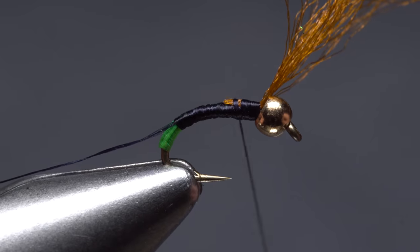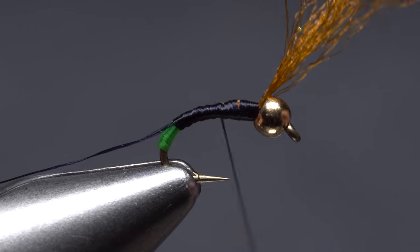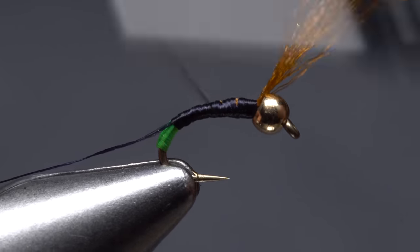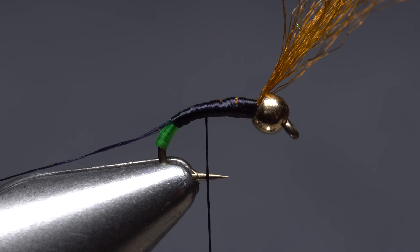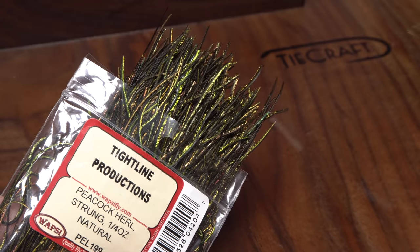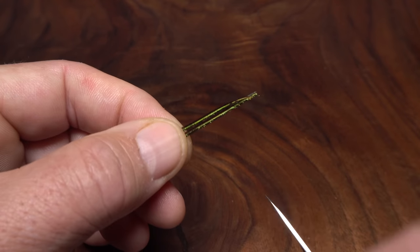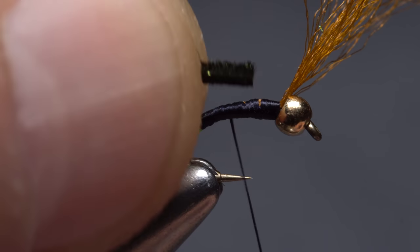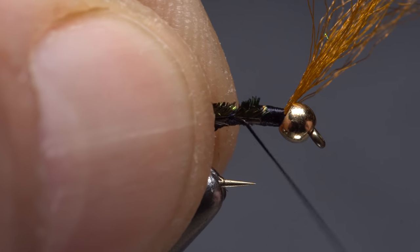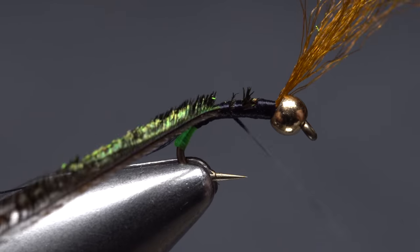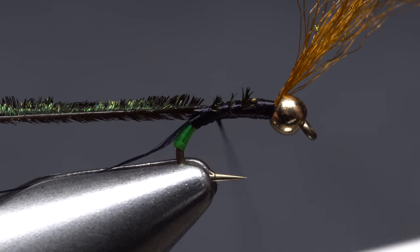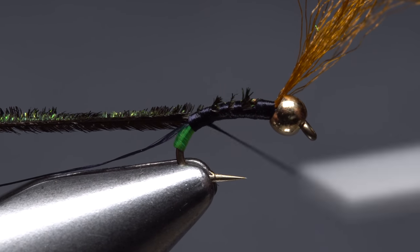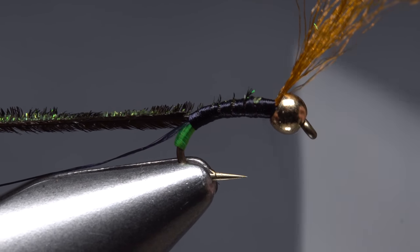Continue taking thread wraps rearward to cover the butt ends of the antron and end with your tying thread about halfway between the hook point and the barb. Pull two peacock hurls free from the rest and snip an inch or so of their brittle tips off square. Place these ends against the near side of the hook and take thread wraps to secure them. Keep taking wraps rearward until you reach the bright green tag, then wrap forward to just in front of the hook point.